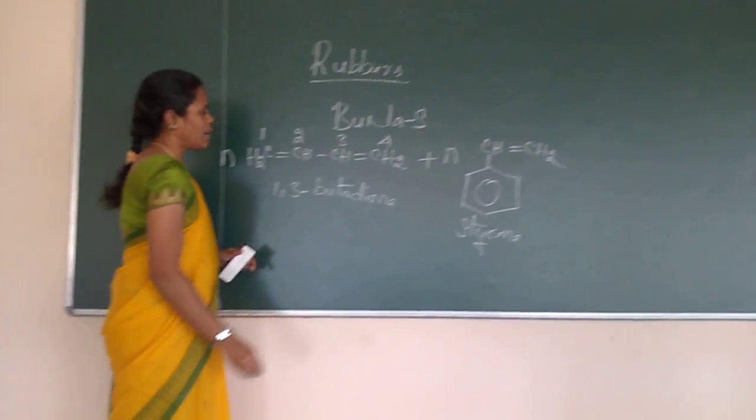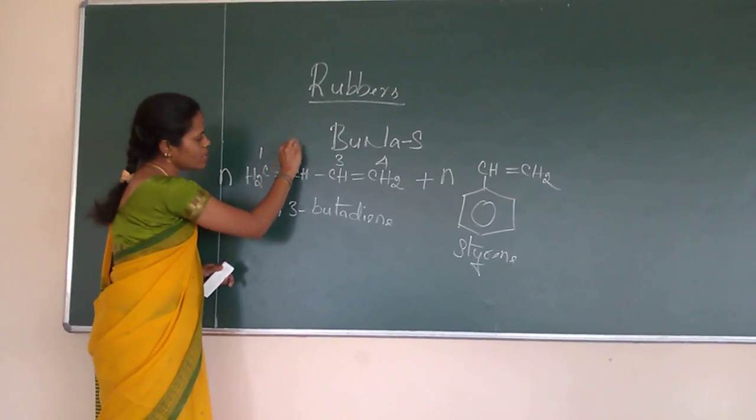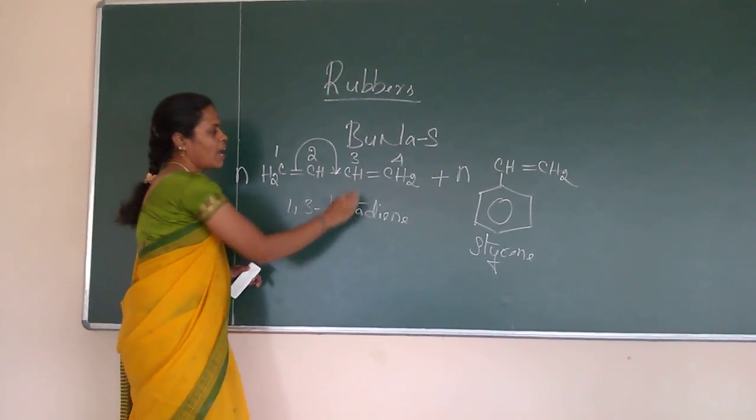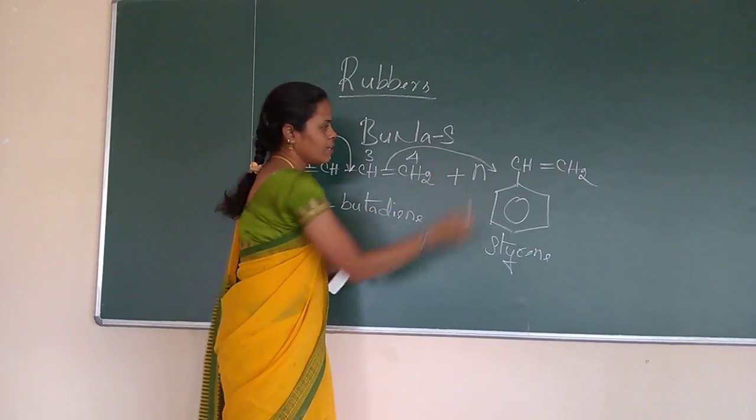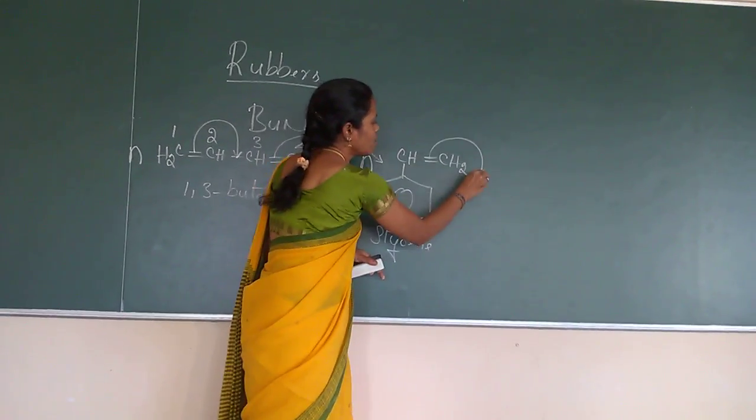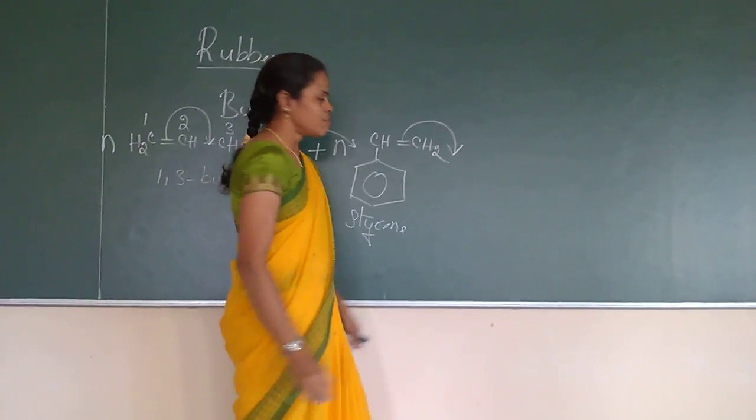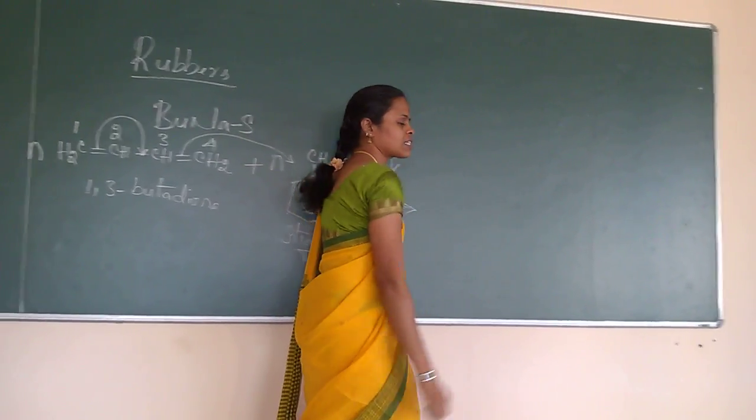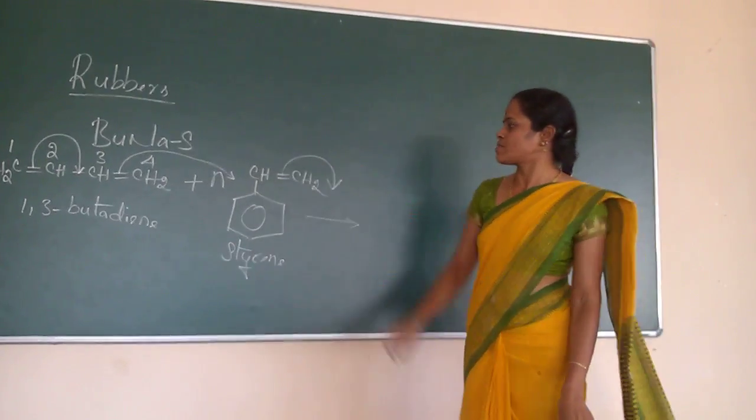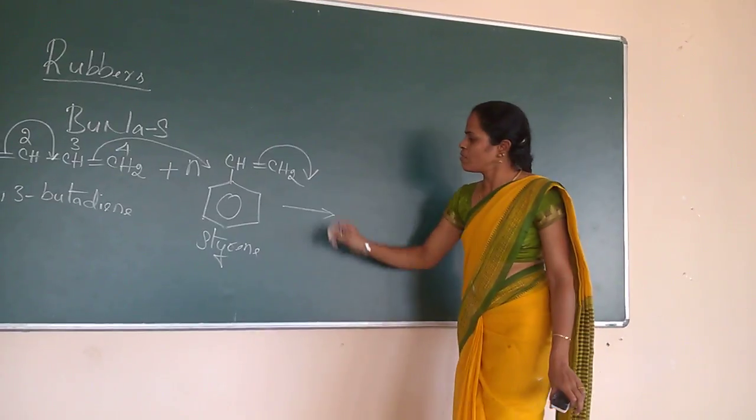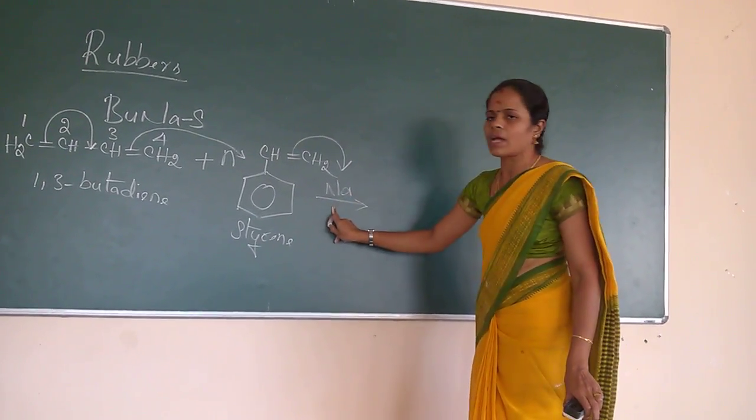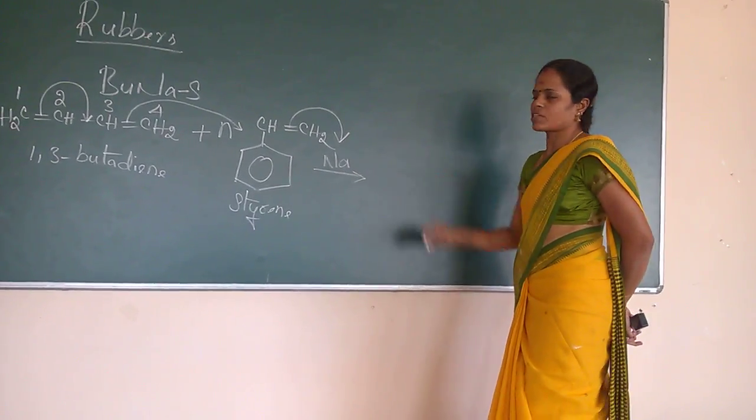Now what will happen? This double bond is getting shifted here and this double bond is getting shifted here and this double bond will shift here. So therefore, what is the structure of Buna-S. These reactions will take place in the presence of sodium catalyst. So let us check the structure.